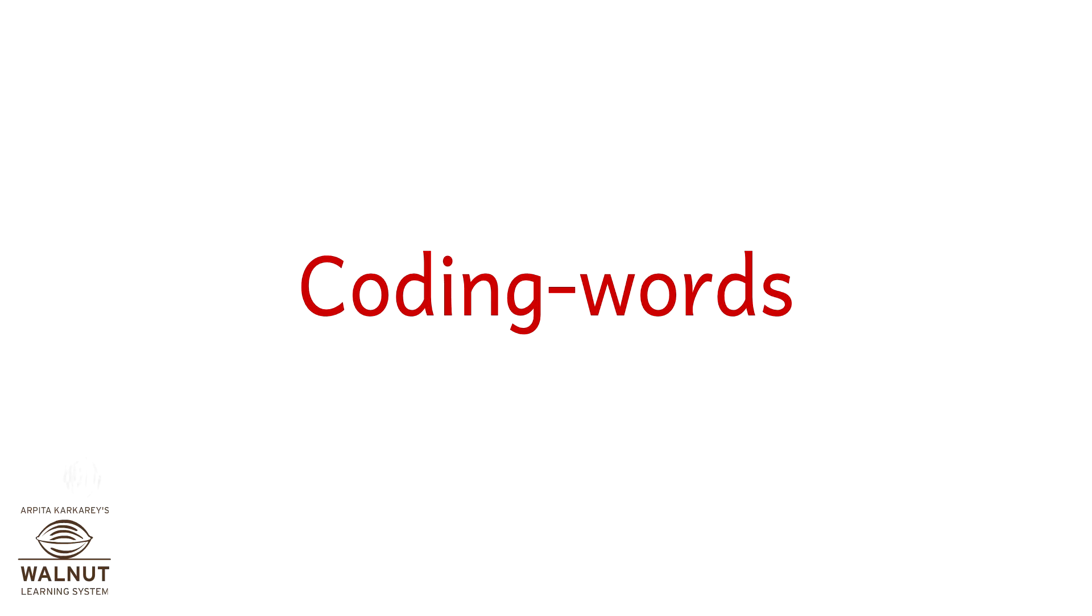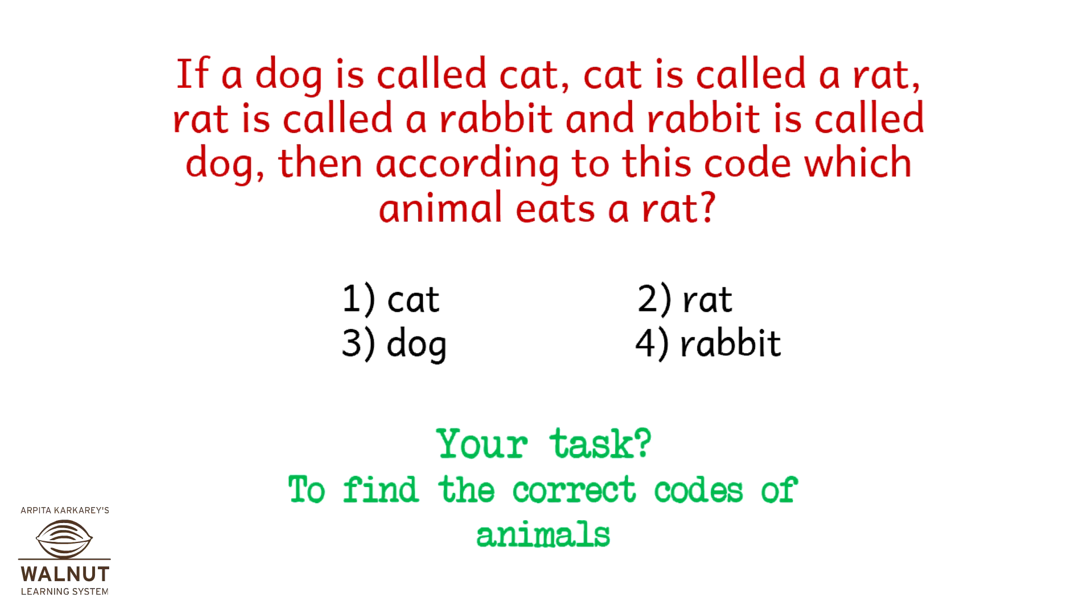Coding Words. If a dog is called cat, a cat is called a rat, a rat is called a rabbit and a rabbit is called dog, then according to this code, which animal eats a rat? What is your task?